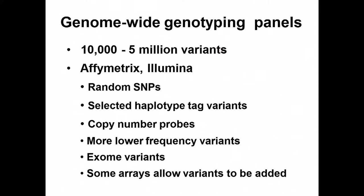Now that we've ascertained individuals for the study, let's genotype them. Genotyping is most efficient and cost-effective when a standard set of variants are present on a genotyping array that can be purchased and genotyped relatively inexpensively. Arrays are available with 10,000 to 5 million variants preselected. Common genotyping products are offered by Affymetrix and Illumina.